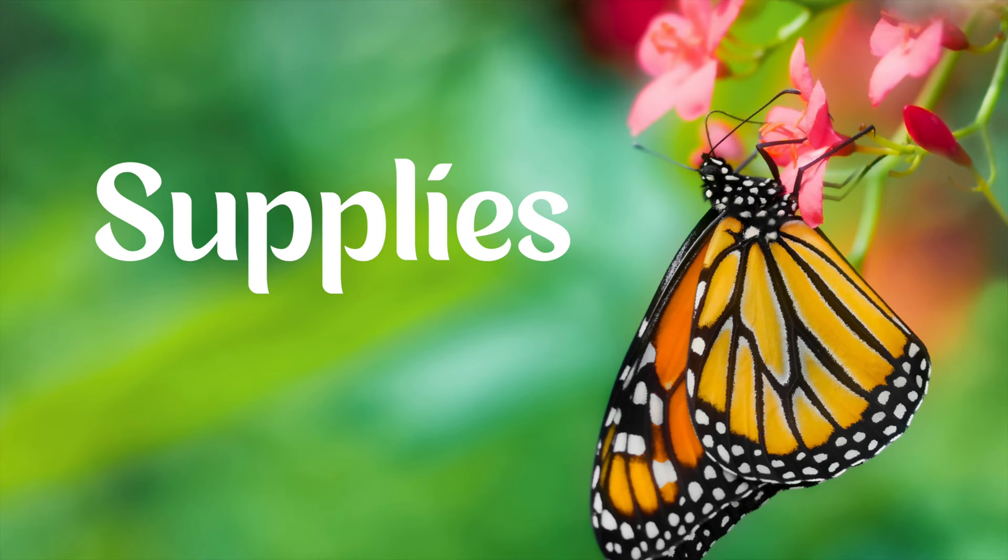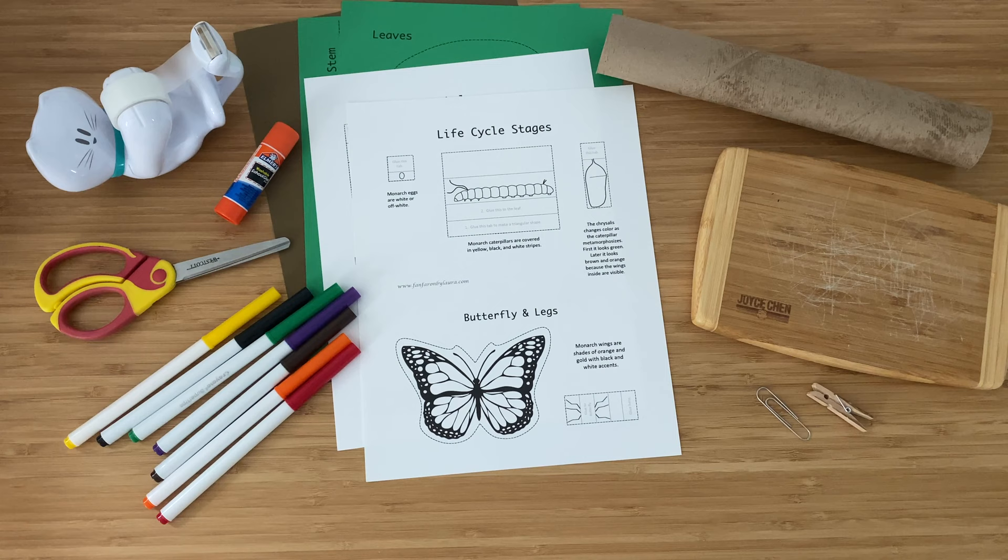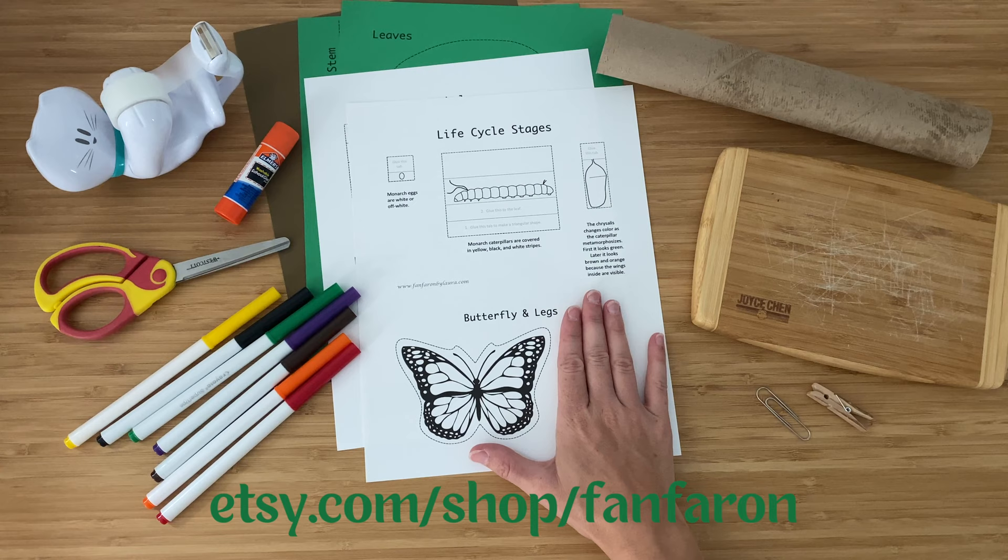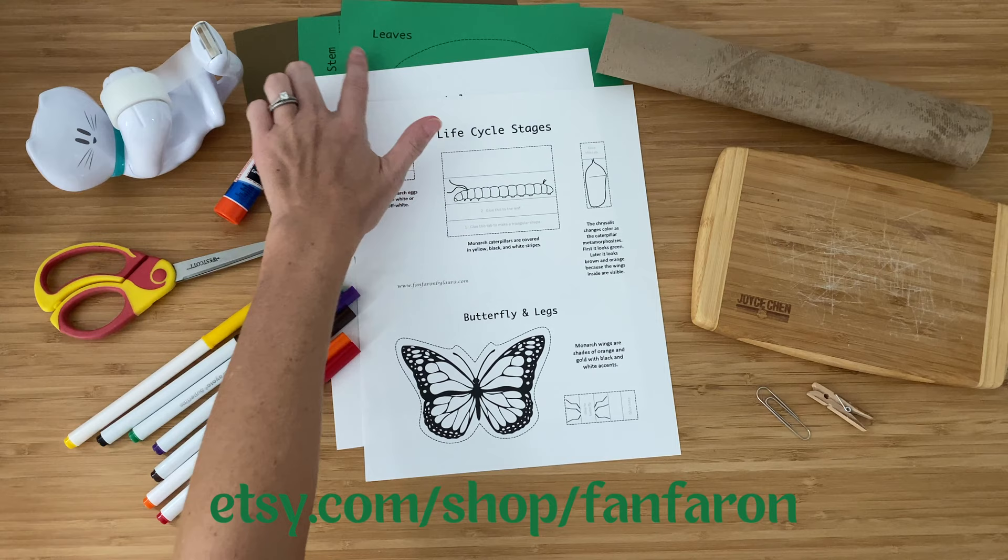Let's make one together. To create the monarch life cycle, start by purchasing this printable from Etsy.com/shop/fanfaron. Usually you'll receive it within a couple of minutes and then you can print it.